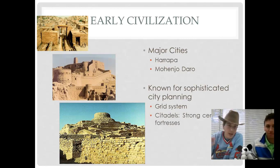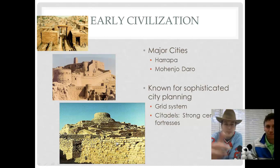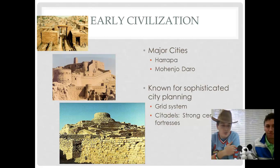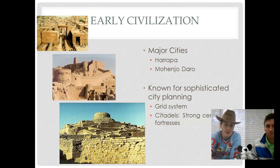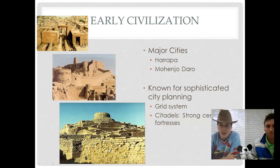This picture down here — you see two of them, one in the middle and one at the bottom — these are pictures of citadels, one of the key terms here. Citadels are strong central fortresses. You'll notice they're raised up so that if invaders want to come in, they have to go up and get through the defenders. They put the military up here so they can stop invaders from coming in.